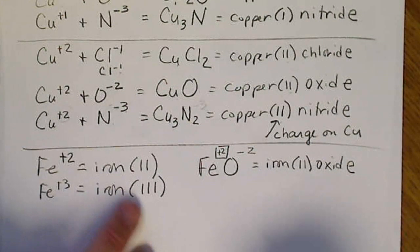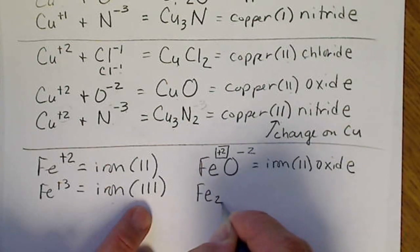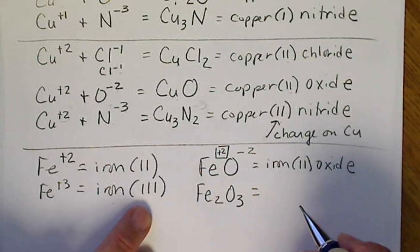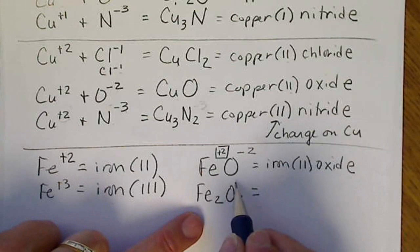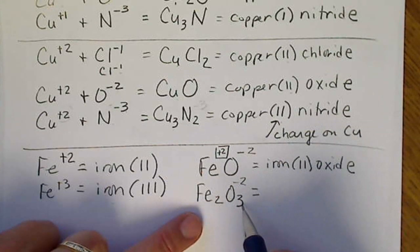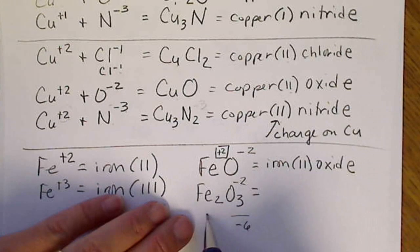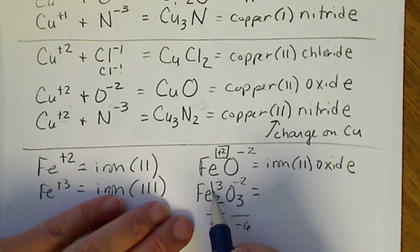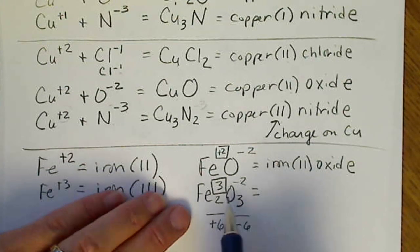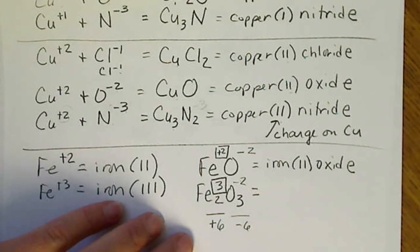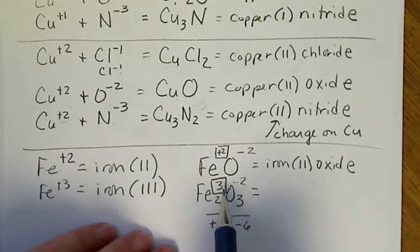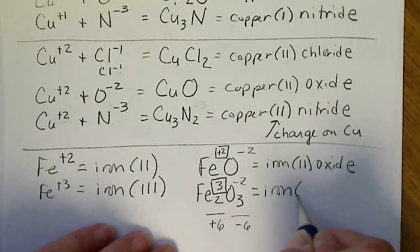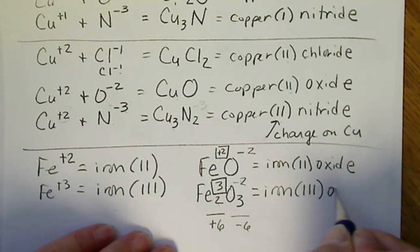When iron 3 gets together with oxygen, we get this formula. And if we put the charge on the oxygen again, we see that 3 negative 2s gives us a negative 6. So the charge on this iron has to cancel the plus 6, meaning we need 3 of these, that the charge would be a plus 3. There are two irons. 2 times 3 gives us positive 6. So this is iron 3 oxide.